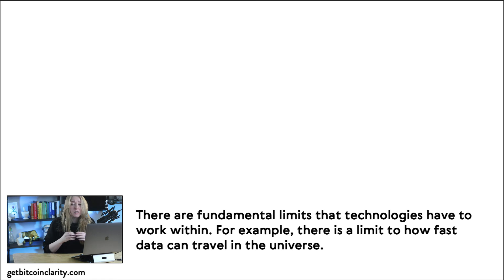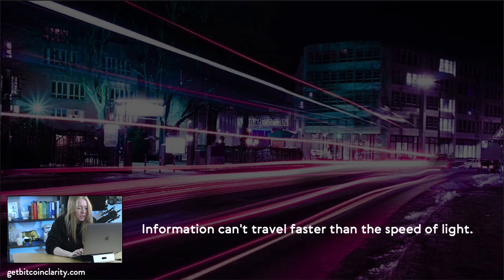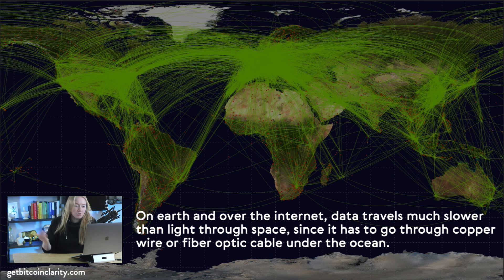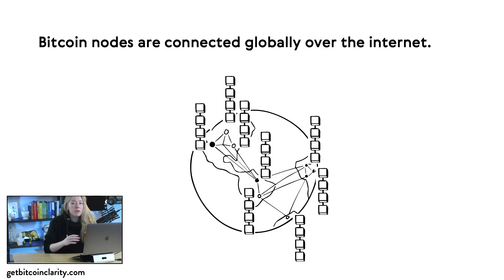There are fundamental limits of every technology we work with. A very fundamental limit is how fast data can travel — which, as far as we know, is the speed of light. On Earth and over the internet, data travels much slower than light through space, since it has to go through copper wire, fiber optic cable, sometimes even under the ocean. The internet is not a homogenous place; there are different speeds at which your data can travel.